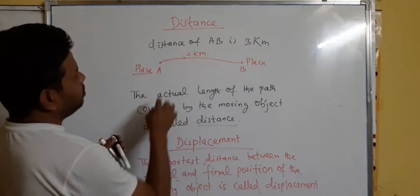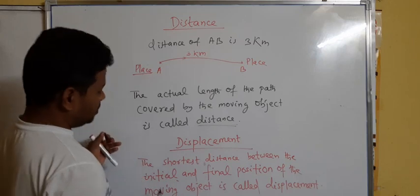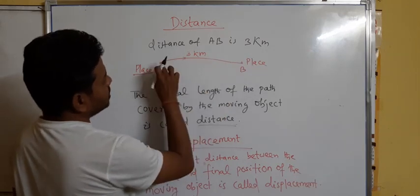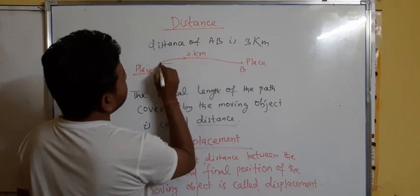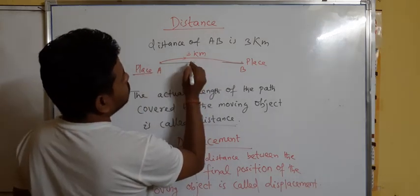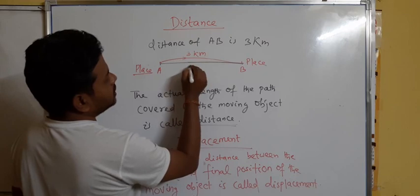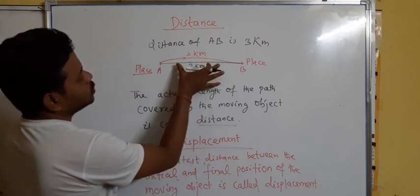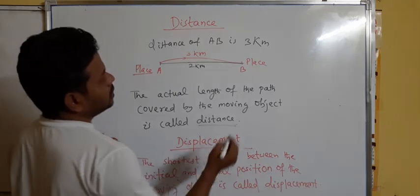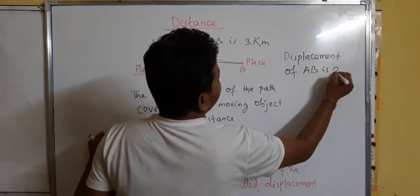If I compare the earlier example: the actual path gives 3 kilometers as distance. But to find displacement, you find the shortest distance between the initial position A and the final position B by drawing a straight line — because a straight line is the shortest distance between two points. That straight line distance might be, say, 2 kilometers. So the distance of AB is 3 kilometers but the displacement is 2 kilometers in that diagram.